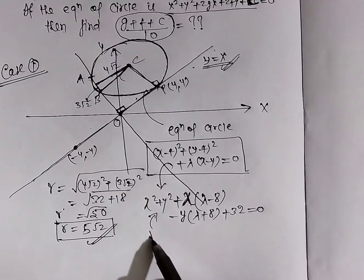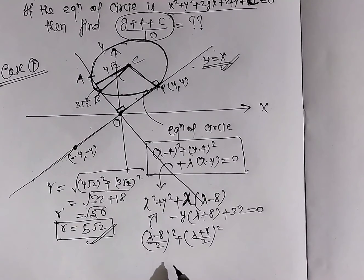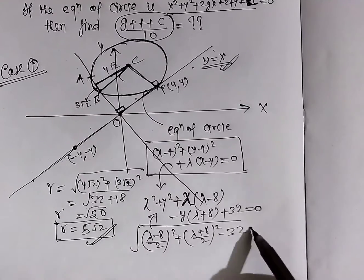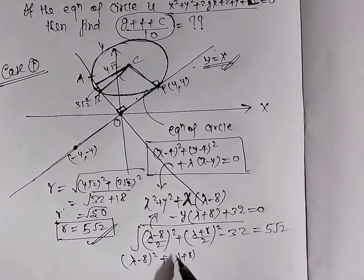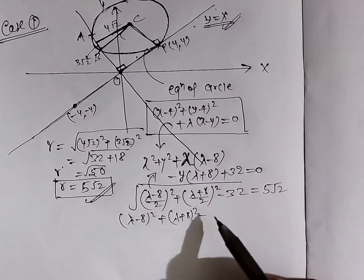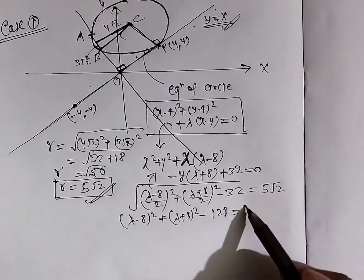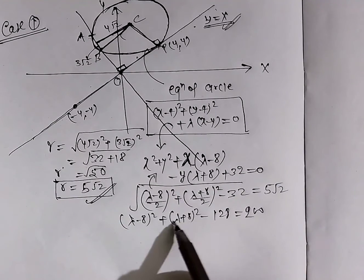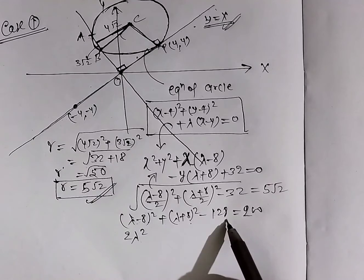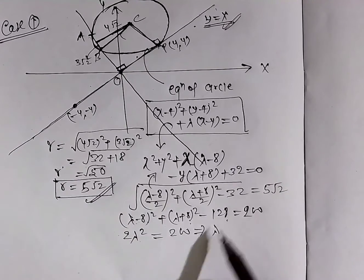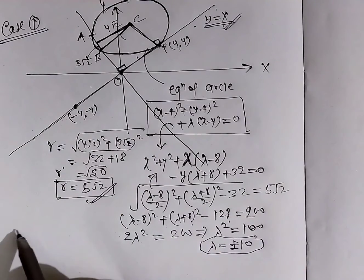Circle का radius formula: √[(λ-8/2)² + (λ+8/2)² - 32] = 5√2. Squaring: (λ-8)² + (λ+8)² = 200 + 128. The 16λ terms cancel, giving 2λ² + 128 = 200 + 128, so λ² = 100, meaning λ = ±10.